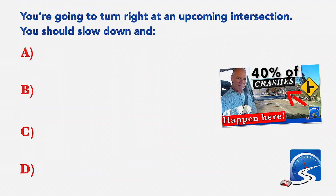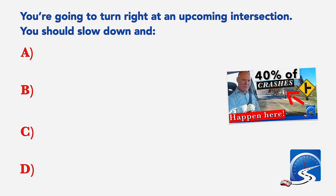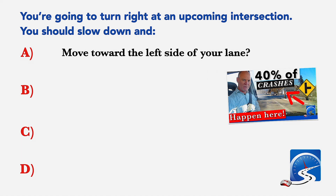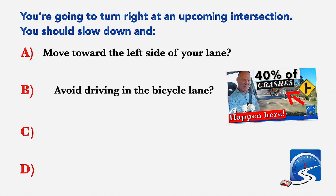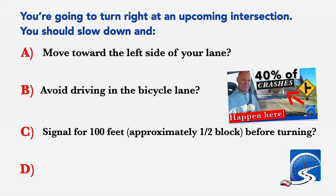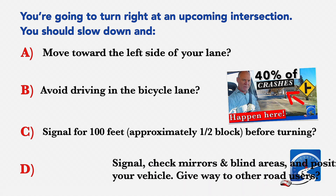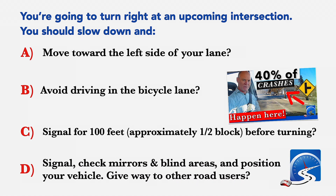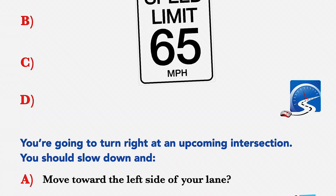You're going to turn right at an upcoming intersection. You should slow down and: A: Move toward the left side of your lane. B: Avoid driving in the bicycle lane. C: Signal for 100 feet, approximately half a block, before turning. D: Signal, check mirrors and blind areas, position your vehicle, give way to other road users. Correct answer D: Signal, check mirrors and blind areas, position your vehicle, give way to all other road users.